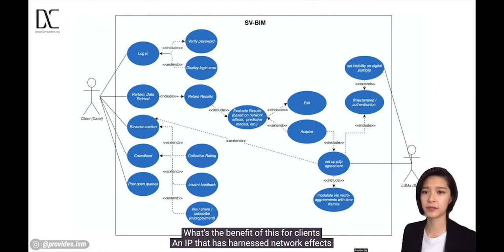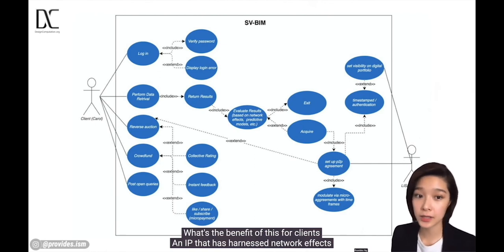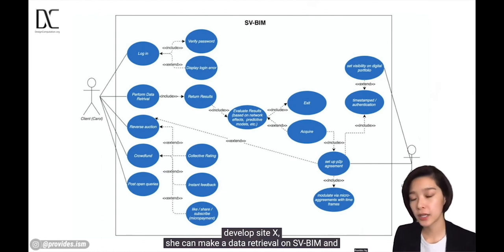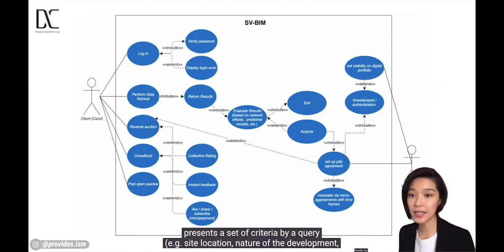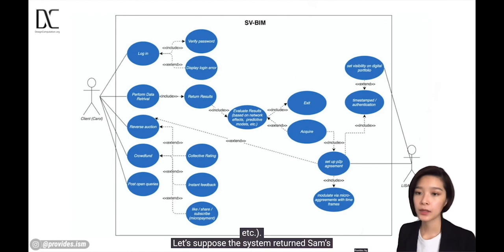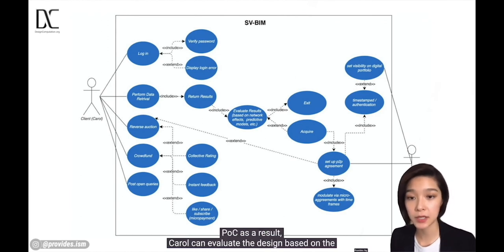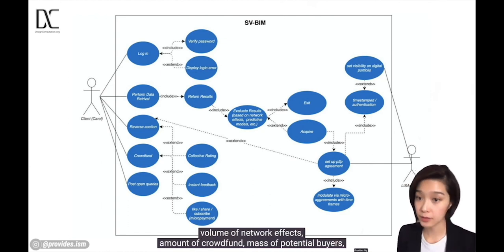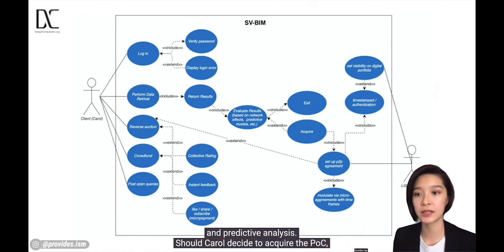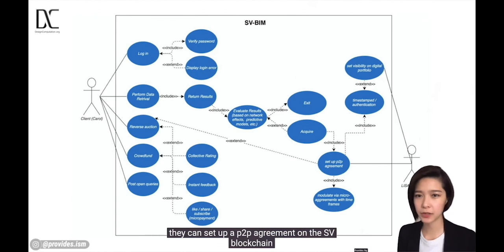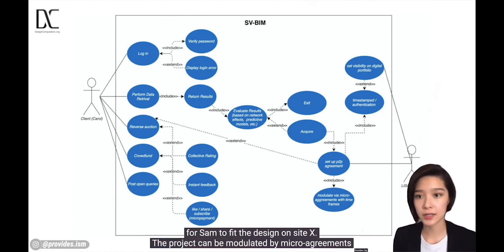What are the benefits for clients? An IP that has harnessed network effects can help clients evaluate future yields. For instance, if a client, Carol, wishes to develop Site X, she can make a data retrieval on SVBIM and present a set of criteria by query — for instance, site location, nature of the development, etc. Suppose the system returns Sam's POC as a result. Carol can evaluate the design based on the volume of network effects, amount of crowdfund, mass of potential buyers, and predictive analysis. Should Carol decide to acquire the POC, they can set up a peer-to-peer agreement on the SV blockchain for Sam to fit the design on Site X.